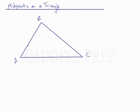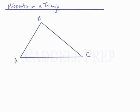In this lesson, we're going to review the midpoints on a triangle. So we have triangle ABC, and obviously each of these is a line segment: AB, BC, and AC.